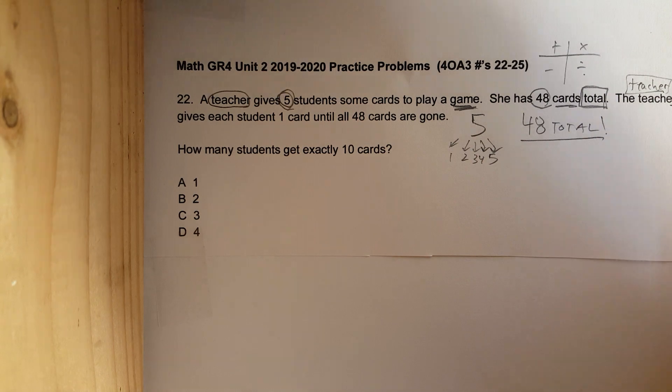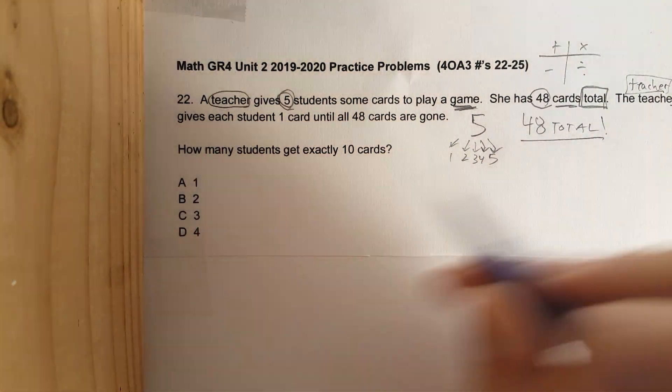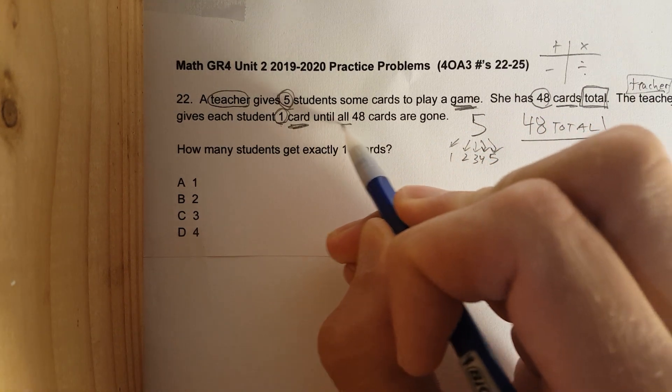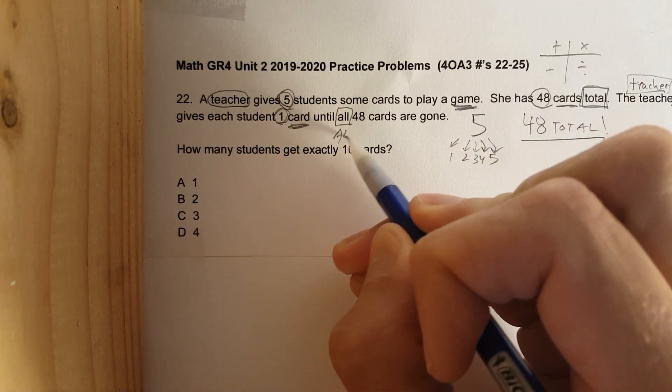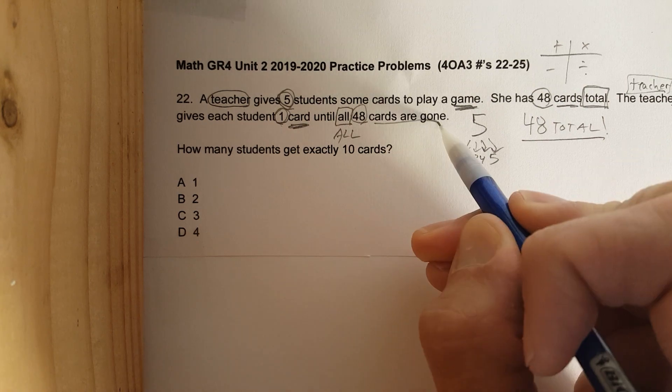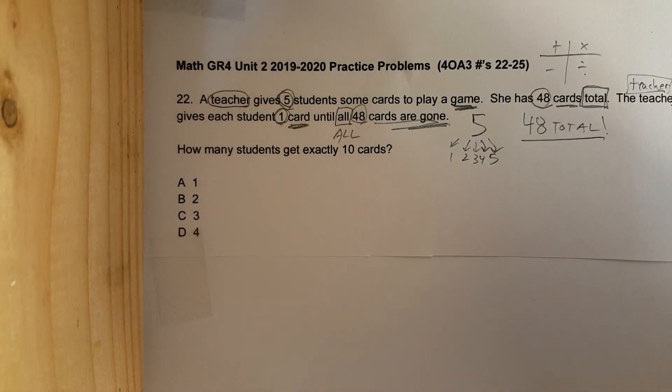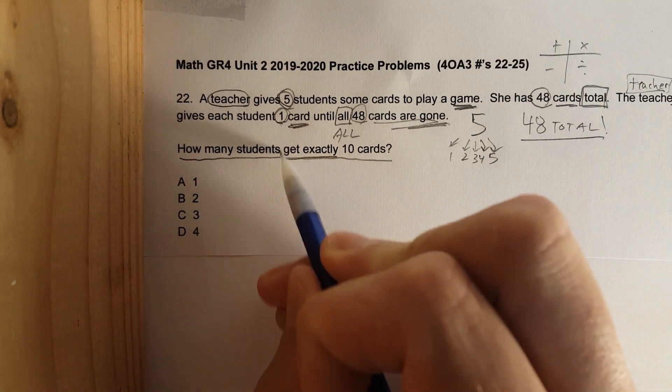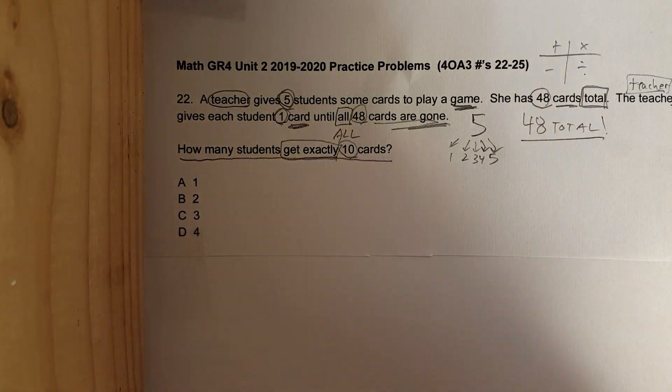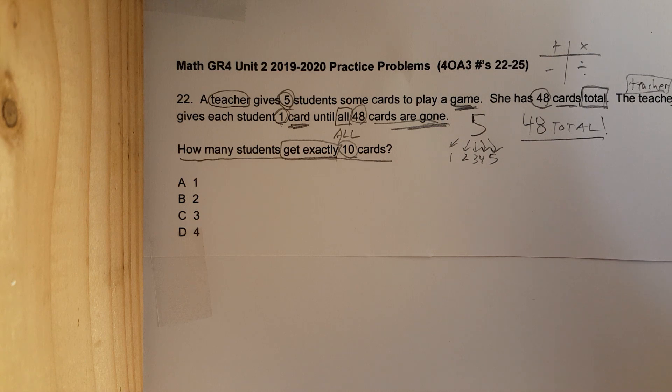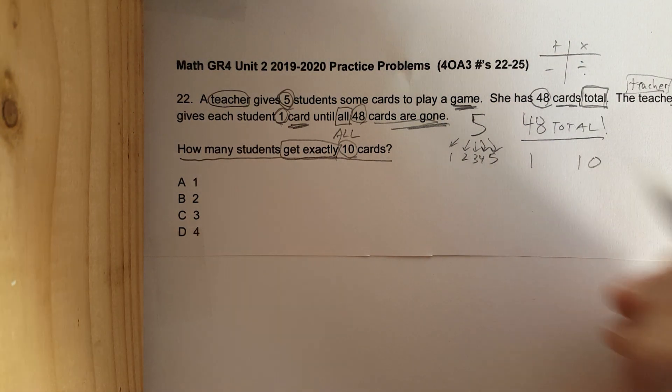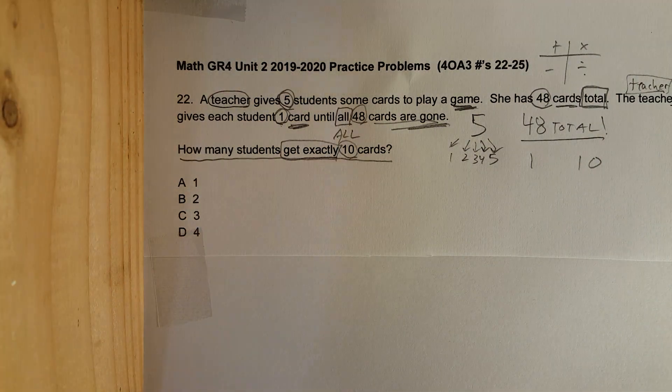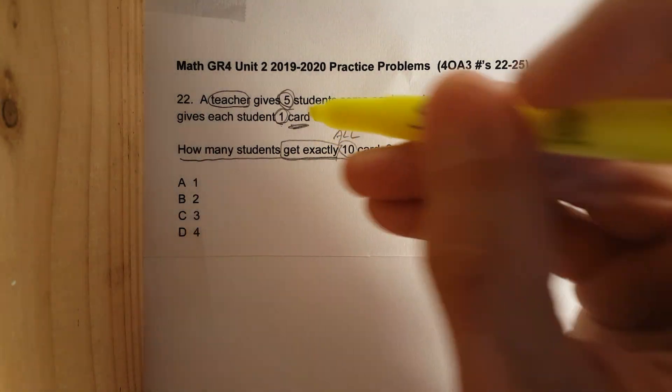The teacher—sorry about that being cut off, sometimes it happens—the teacher gives each student one card until all 48 cards are gone. Underline the question: how many students get exactly 10 cards? Okay, so some more numbers: one and ten. Let's go back. Word problems: read them three times, tear them apart.